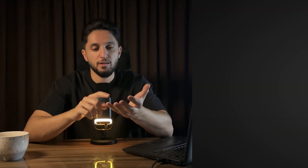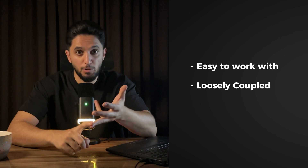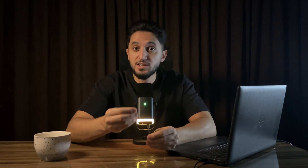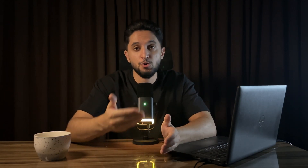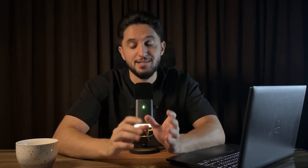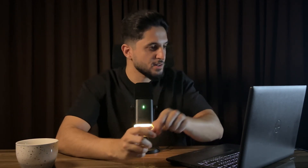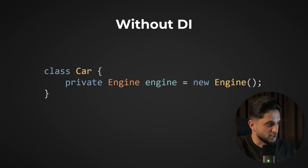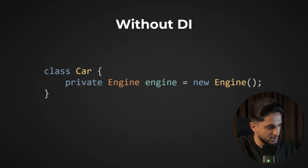The first pattern is responsible for making your code easy to work with, loosely coupled and scalable. It's called dependency injection. I'll first explain the core idea and then show you a glimpse of the difference in implementation across these frameworks. Dependency injection is an application of the principle called inversion of control. Without dependency injection, a class would create its own dependencies using the new keyword — for example, a car class getting an engine instance using new Engine.